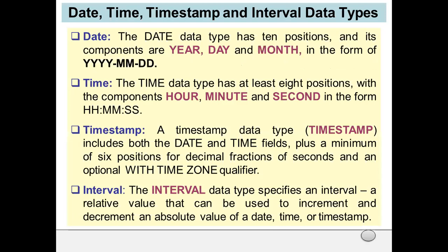Next is date. The date data type has 10 positions with components year, month, and day in the form YYYY-MM-DD. The time data type has at least 8 positions with components hour, minute, and second in the form HH:MM:SS. Next comes timestamp. A timestamp data type includes both date and time fields plus a minimum of 6 positions for decimal fractions of seconds and an optional WITH TIME ZONE qualifier.